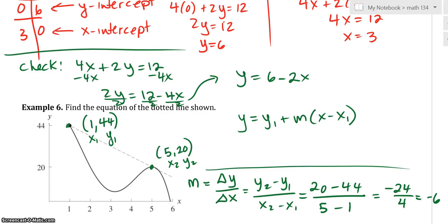So now, I can go ahead and use my point. I'll use this point (1, 44). My m, I found, was -6. We'd rather just put minus 6.